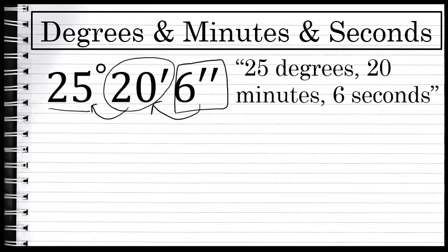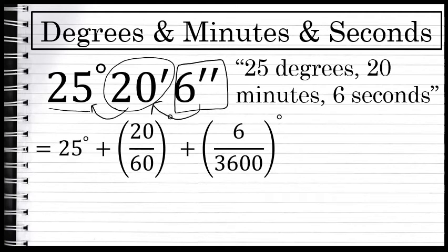So if I would want to convert 25 degrees 20 minutes 6 seconds to decimal form, what I would have to do is the following addition: 25 degrees, and then 20 minutes is 20/60ths of a degree.